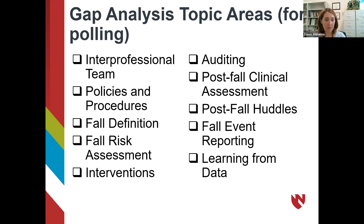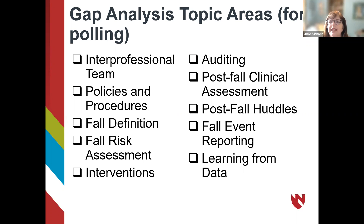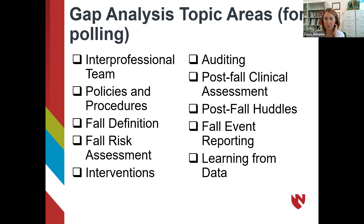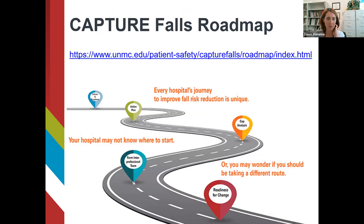Compliance with family post-fall huddles was also mentioned. As we give the tour of the roadmap, I'll try to highlight sections where you can find resources to help with these areas if you're struggling. So why do we call it a roadmap? What's the rationale for that analogy? It has to do with the fact that everybody might be taking a slightly different path and starting from a slightly different spot.